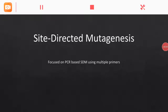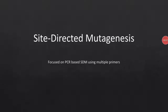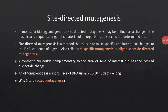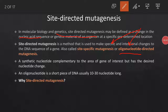Assalamu alaikum. Today we are focused on site-directed mutagenesis, mainly PCR STM using multiple primers. Site-directed mutagenesis is a change in the nucleic acid sequence and genetic material of an organism. This change is specific and intentional — specific means at a particular site, and intentional means by our own will. It is also called oligonucleotide-directed mutagenesis; an oligonucleotide is a short piece of DNA, usually 10 to 30 nucleotides long.